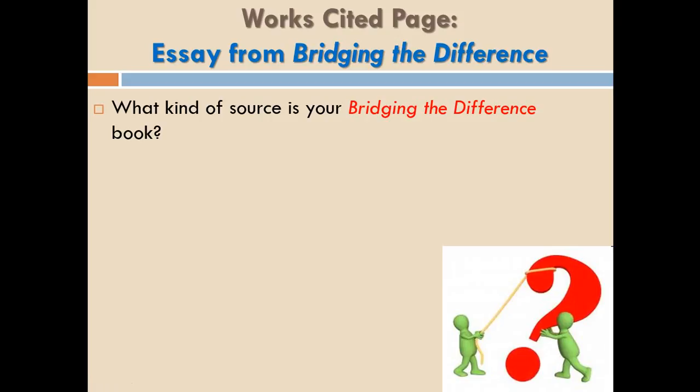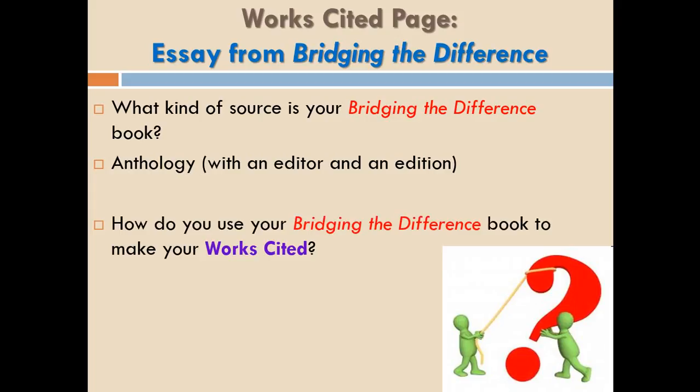It's important to know what kind of source you're dealing with. The Bridging the Difference book is an anthology — it contains lots of different essays by lots of different authors. You'll also notice that this book has an editor and an edition. So those are things we need to keep in mind as we make our Works Cited. You can go to page 86 for a basic guide with specific examples for different types of sources.